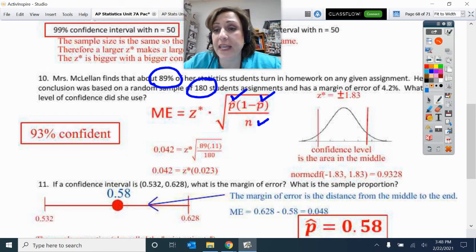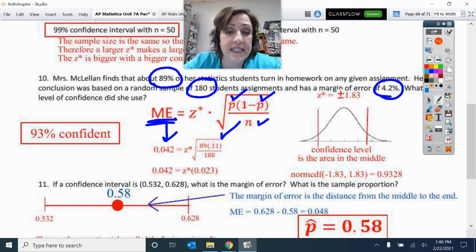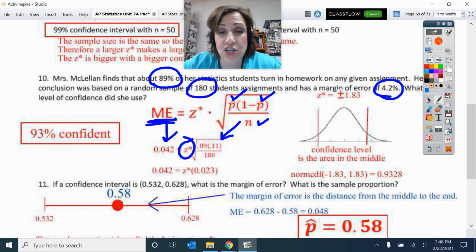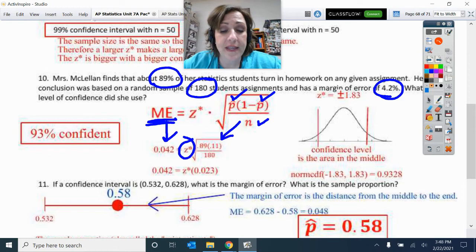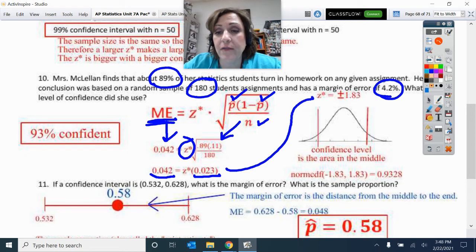I base that conclusion on 180 students, so that is my N, and then a margin of error of 4.2. So that is this number here. So look, I fill in all of these items, and the only one that is missing is Z star. So I then solve algebraically for that, and then I do my little 0.042 divided by 0.023 to get Z star. Z star then is 1.83.